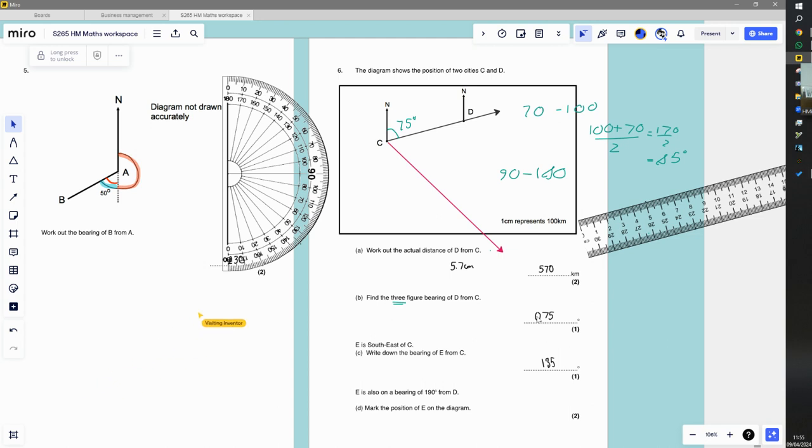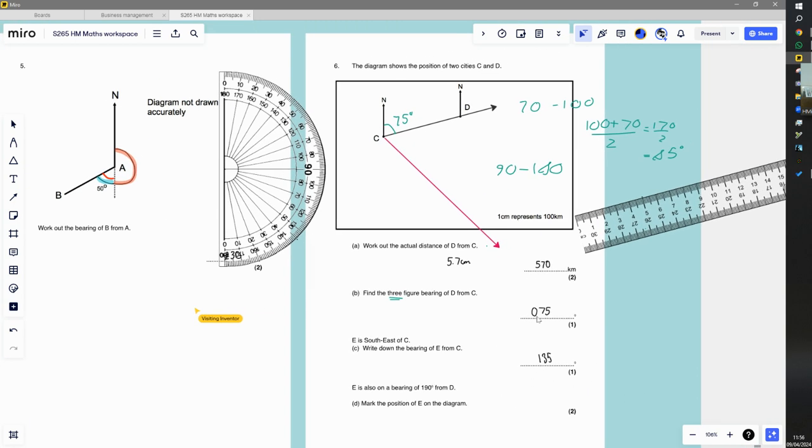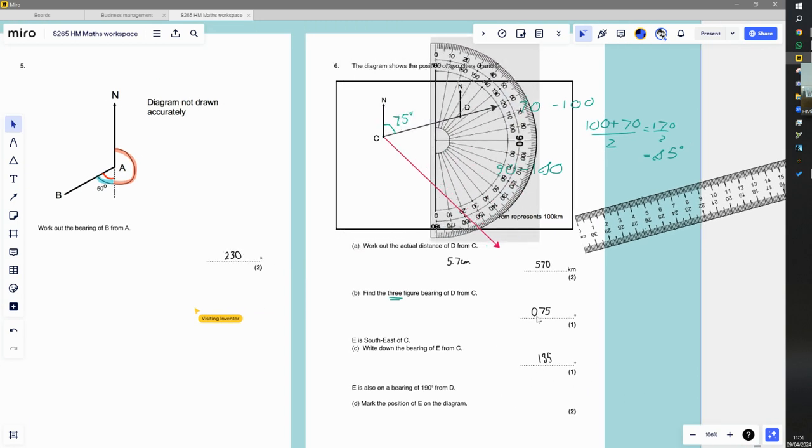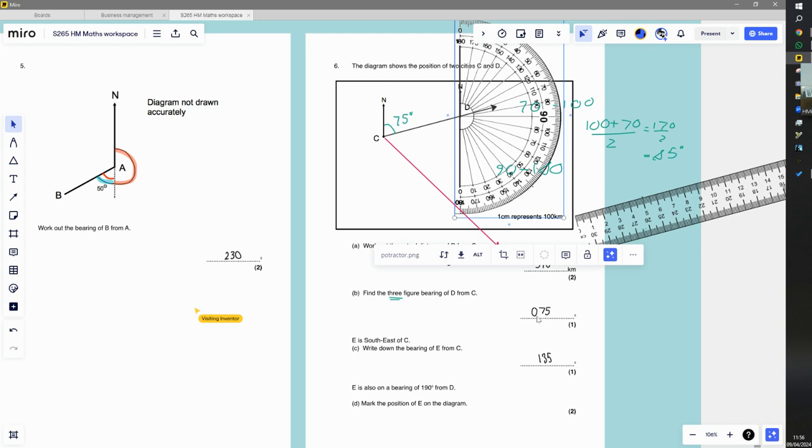However, it also tells me that E is also on a bearing of 190 degrees from D. So basically, if I have this one here, it says there's 190 degrees from D. Well, if we go 180 degrees, that'll take us vertically underneath, this will take us to south. So we need to go another 10 degrees, so I need to rotate this.